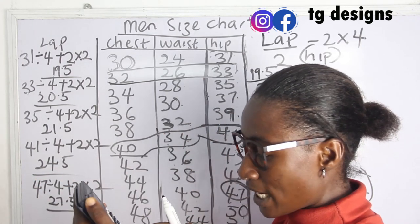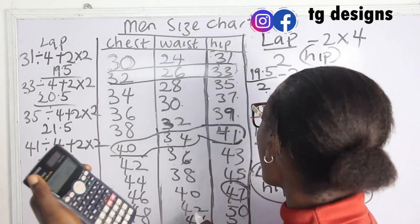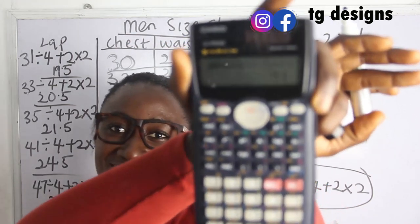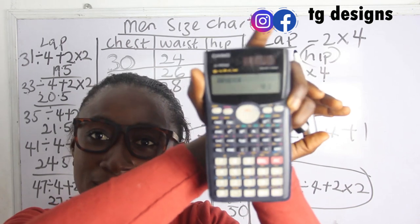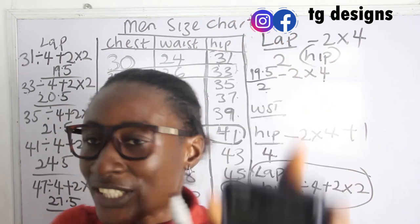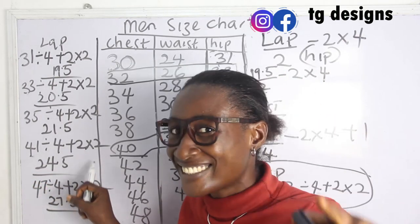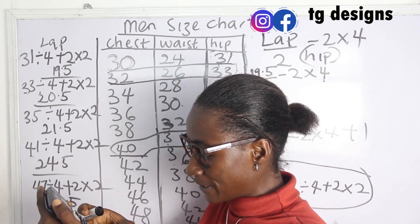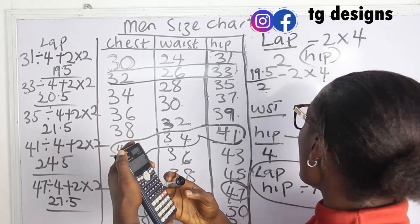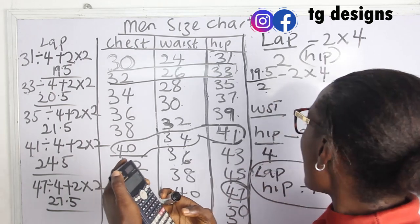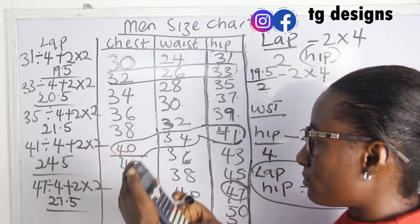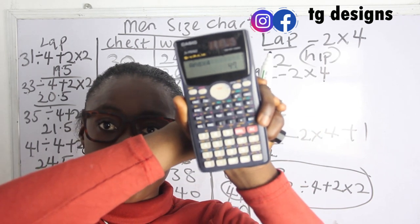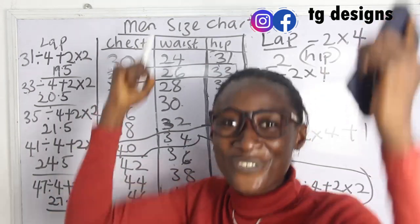For lap = 24.5: 24.5 ÷ 2 = 12.25; minus 2 = 10.25; times 4 = 41 inches — matching hip of 41. For lap = 27.5: 27.5 ÷ 2 = 13.75; minus 2 = 11.75; times 4 = 47 inches — matching hip of 47. All calculations check out perfectly.